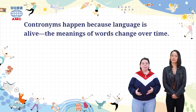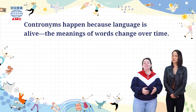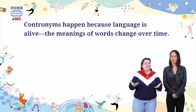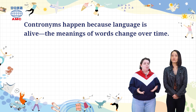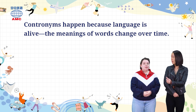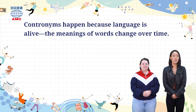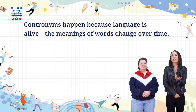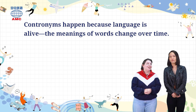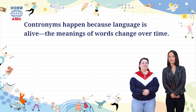Contronyms happen because language is alive — the meanings of words change over time. English is hundreds of years old, and right now we speak a very different language than Shakespeare spoke. It's still English, but it has changed so much. We have Old English, Middle English, and then modern English — that's what we speak now. English is a constantly changing language — 英文不断地在演化改变，其实every language is like this.